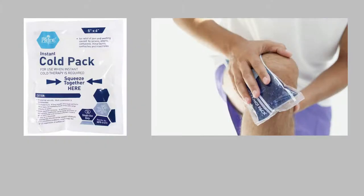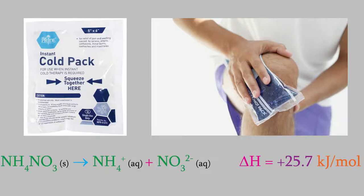For example, one endothermic reaction that you may have seen occurs in cold packs that are used to prevent swelling after an injury. The reactants are kept in separate containers in the cold pack. When you squeeze the pack, the inner containers are broken so that the chemicals mix and the reaction occurs. How is it possible for reactions like this to occur? There must be a second factor, something in addition to the enthalpy, that determines whether or not a reaction can be possible.